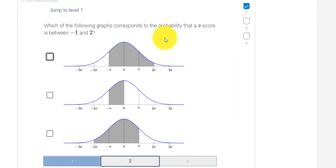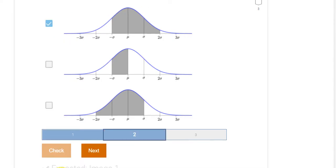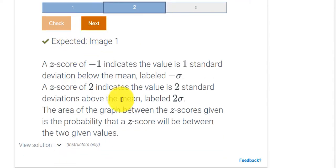Which of the following graphs corresponds to the probability that a z-score is between negative one and two? So z-score, that means think of the mean in the middle at zero. If I subtract one standard deviation, I'd be here. And if I were to add two standard deviations, that comes out to here. So I think this would be our answer. Let's check it. And we get the check mark.